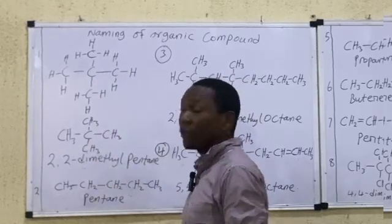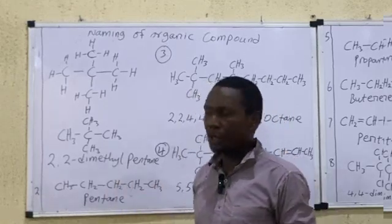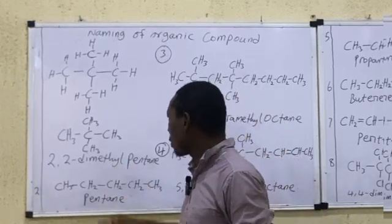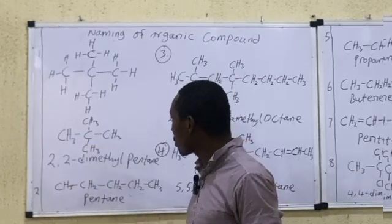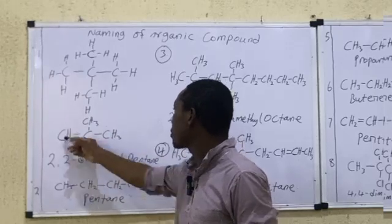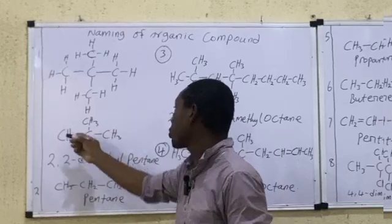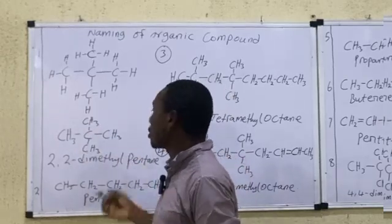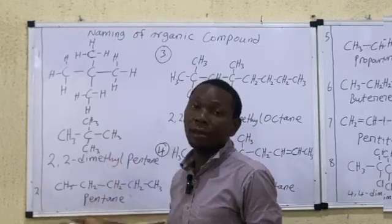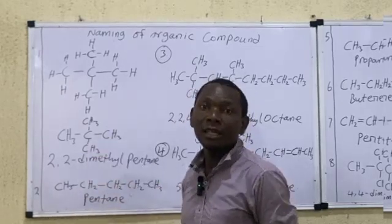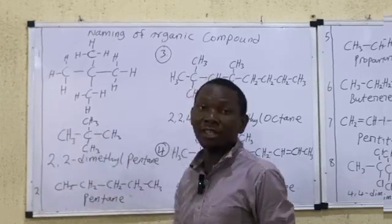How do we name this? The first rule is to pick the longest chain as the parent chain. Counting from any direction gives us 3 carbons — that is the longest chain. The functional group here is a single bond, so it belongs to the alkane homologous series. Next, we count from the side that gives the branch the least possible number. Counting from this side, the branches are at carbon 2.